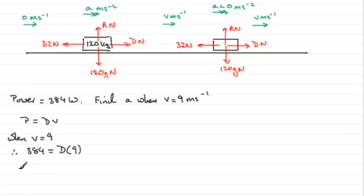We therefore have 384 equals D multiplied by 9. And if we divide both sides by 9, you end up with D equaling 384 divided by 9. That cancels down to 128 over 3, and that would be measured in newtons.